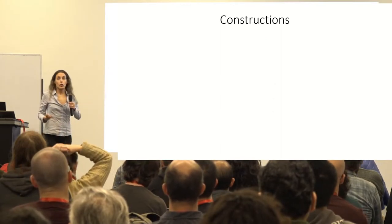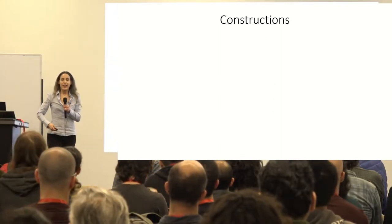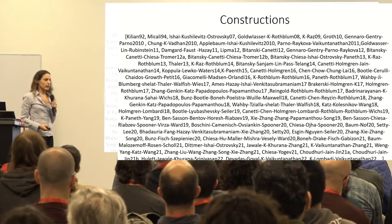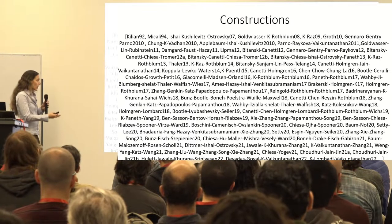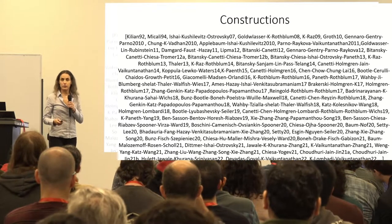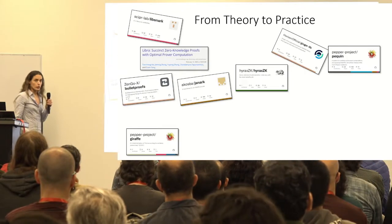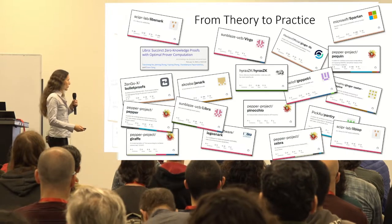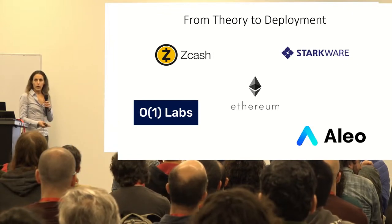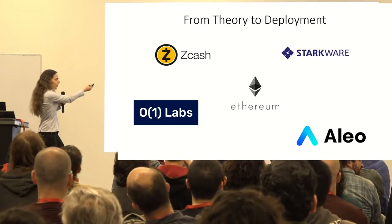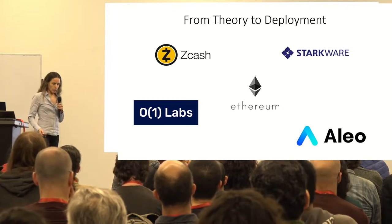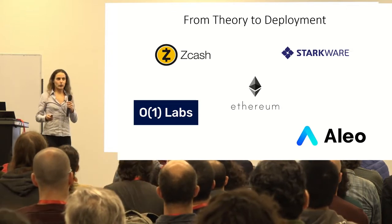Do we have any such constructions of SNARGs? The answer is: we actually have a lot. It's a really active area in cryptography. There are beautiful theoretical ideas and also a lot of practical implementations. Here are a few prototypes — I'm sure there are many more. Not only are these things implemented, they're actually deployed by many companies. Recently, Ethereum started using these SNARGs, and there are many more.